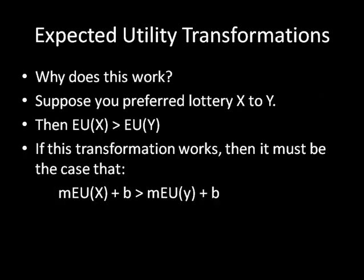So you might be wondering why that works. Suppose you preferred lottery x to y — then the expected utility of x is going to be greater than the expected utility of y. We're allowing for these things to be lotteries as well, but we're going to look at outcomes here because that's a little bit easier to work with. Of course, all of this works with non-degenerate lotteries as well.